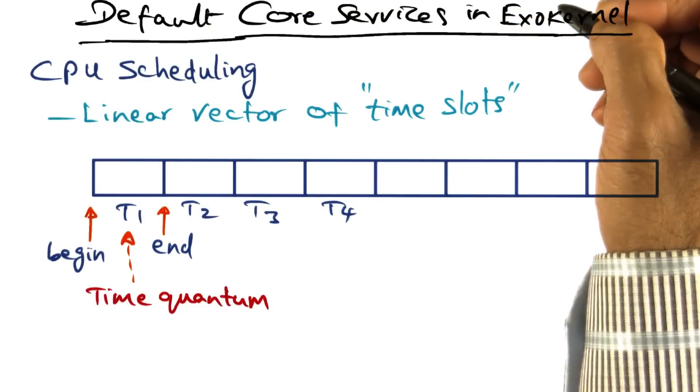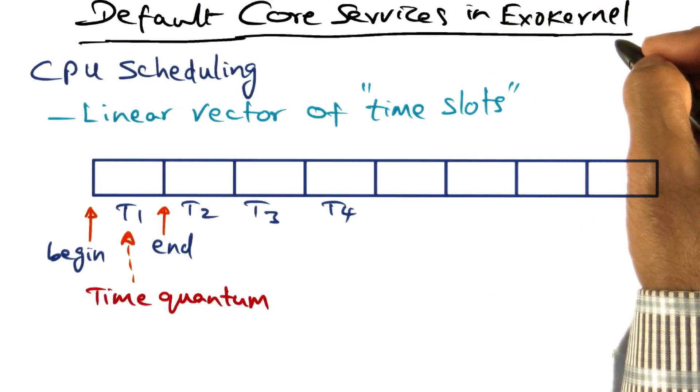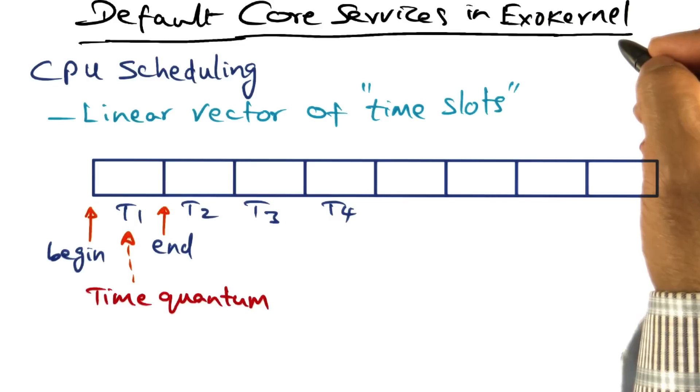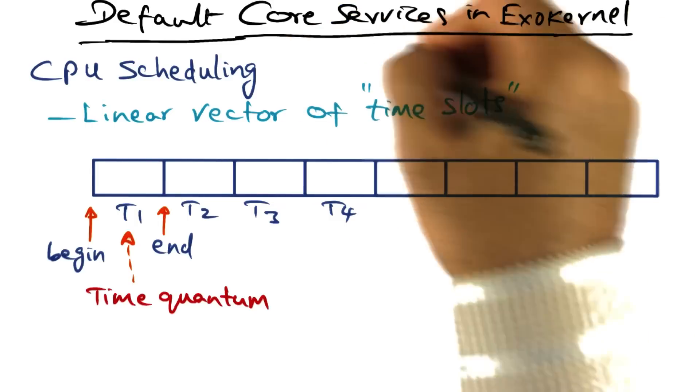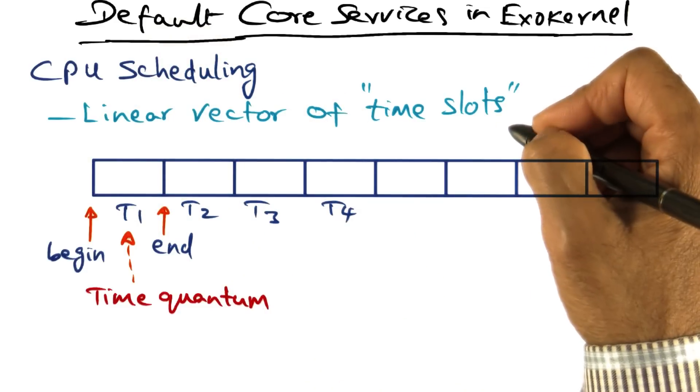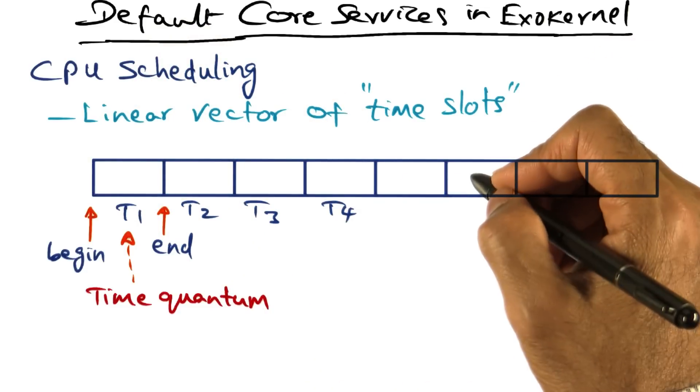The second core service, of course, is CPU scheduling. An exo-kernel, in order to facilitate this core service, maintains a linear vector of time slots.